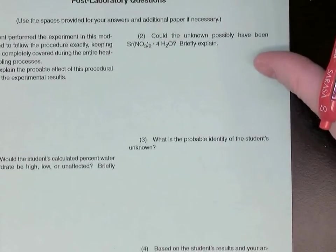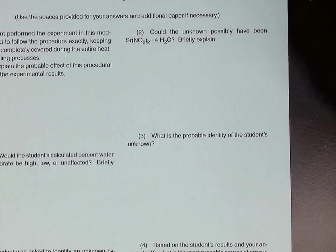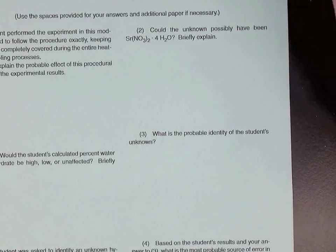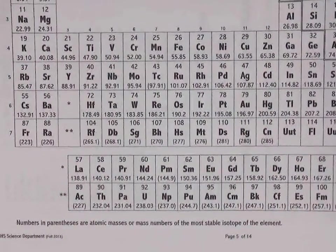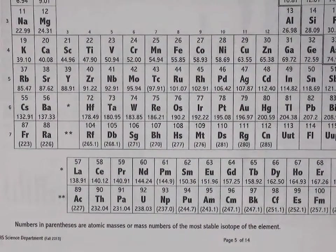Now, part two of question two says, could the unknown have possibly been strontium nitrate tetrahydrate? And explain your answer. Well, to find out, we're going to need a periodic table. We're going to need a periodic table to look at the atomic masses of these things.